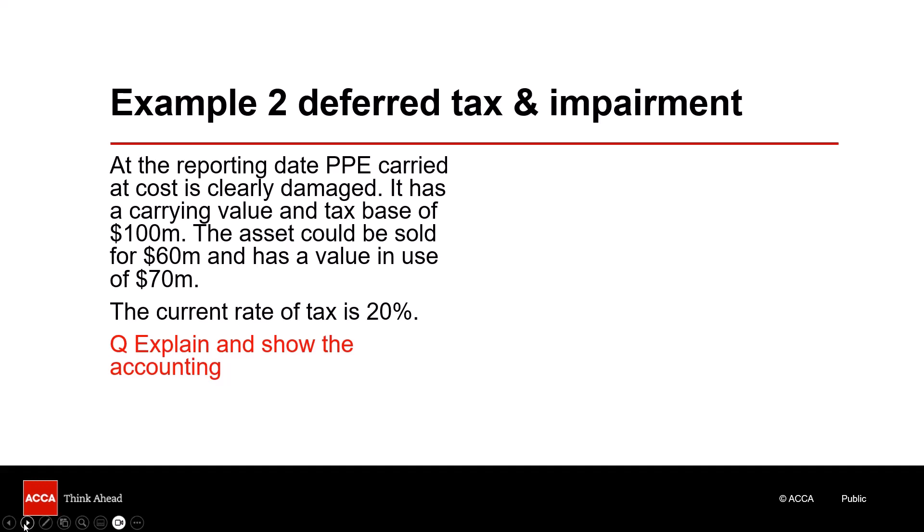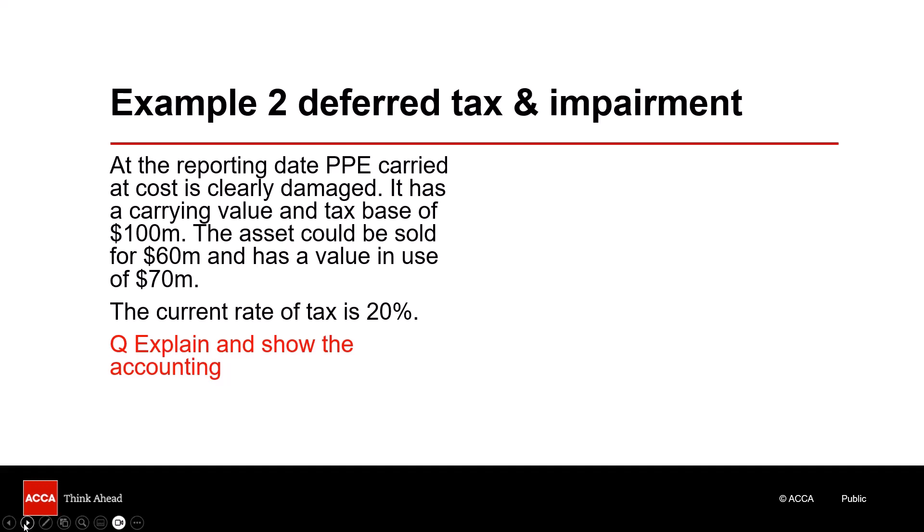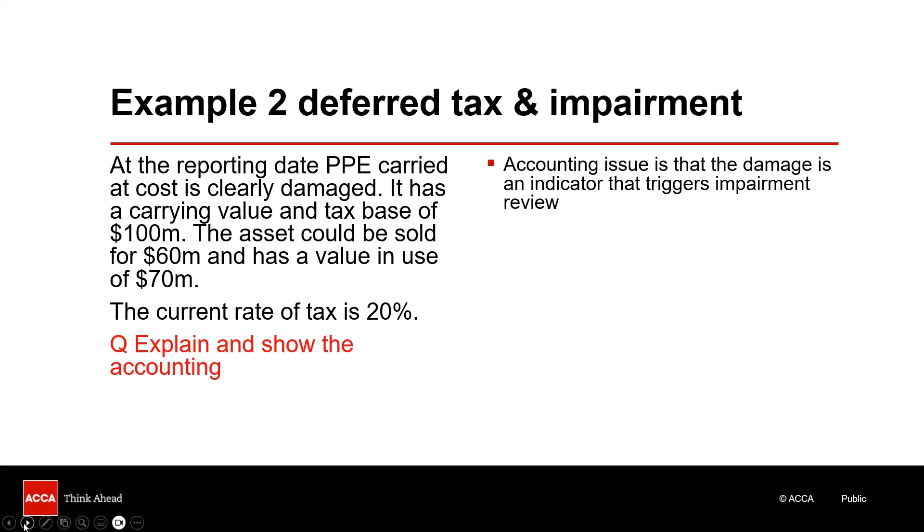The elephant in the room is impairment. Deferred tax is difficult to examine in isolation — it has to relate to something else, and in this case the asset has been impaired. Although impairment is not specifically mentioned, there has been damage to the asset, which is an indicator to do an impairment review. Although we could sell the asset for 60, it has a value in use of 70. An asset is impaired when the carrying value exceeds the recoverable amount — that's the case here because 100 is bigger than both 60 and 70. The recoverable amount is the higher of fair value less costs to sell and value in use, so we have an impairment loss of 30.